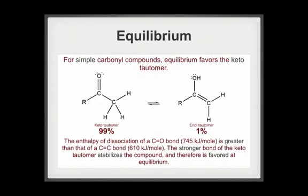For simple carbonyl compounds, equilibrium favors the keto tautomer. This equilibrium distribution can be explained by bond strengths. The enthalpy of dissociation of a carbon-oxygen double bond is greater than that of a carbon-carbon double bond. The keto tautomer is stabilized by the stronger bond and is therefore favored at equilibrium.